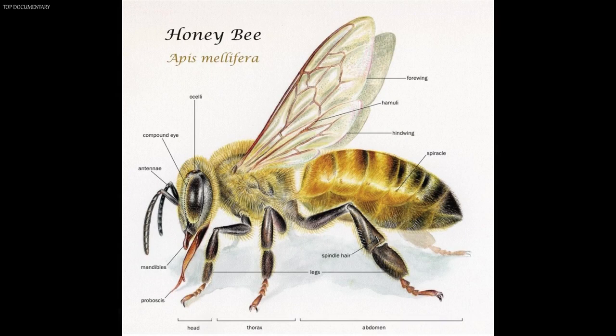A bee has two thin wings on each side of its thorax. The two front wings are larger than the hind wings. When the bee flies, the front wings and the smaller hind wings become fastened together by a row of tiny hooks along the edge of the front wings. The wings can move up and down, and forward and backward. A bee can fly forward, sideways, or backward, and can hover in one place in the air.